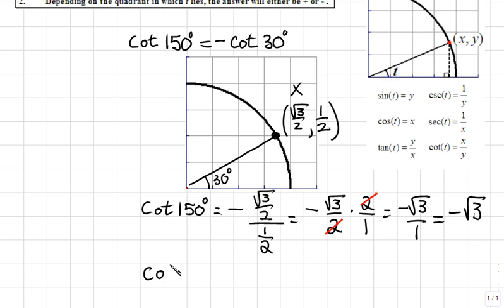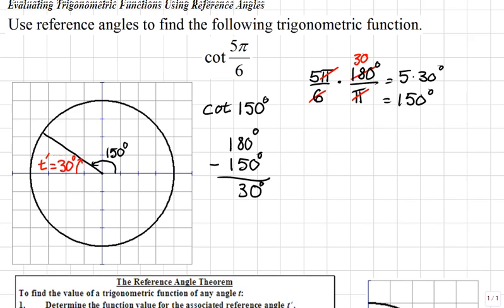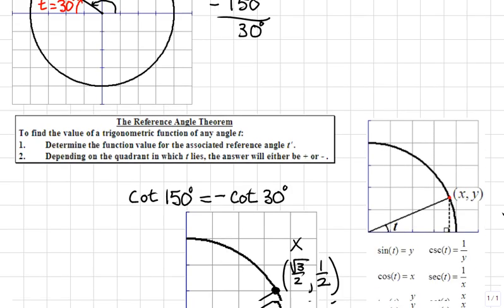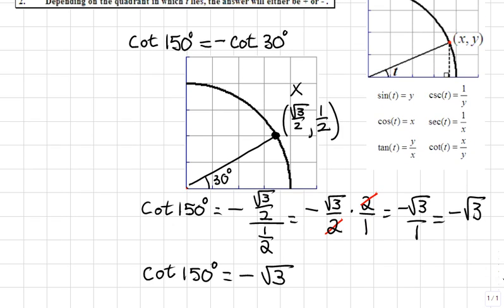In summary, cotangent of 5π over 6, we converted to a degree measure and found its reference angle. And once we found the reference angle, we were able to use definitions of x over y for cotangent to find from the unit circle the value of negative √3.